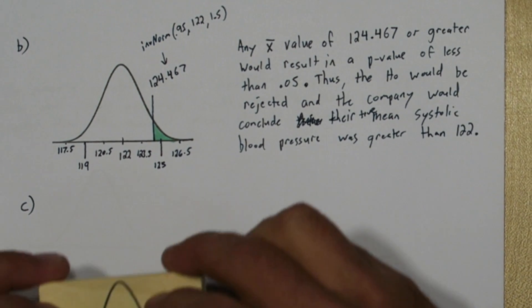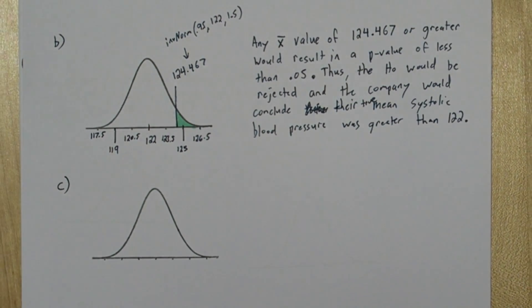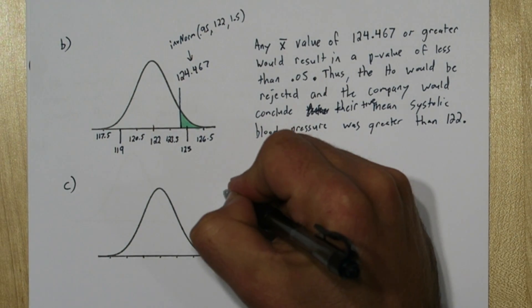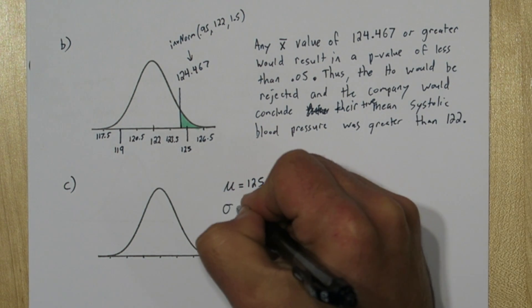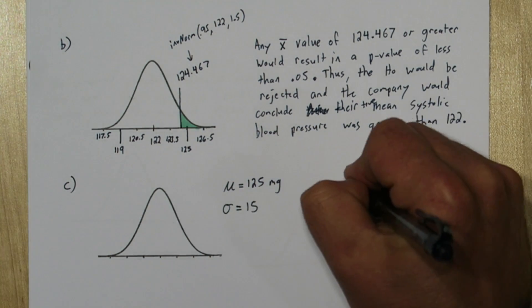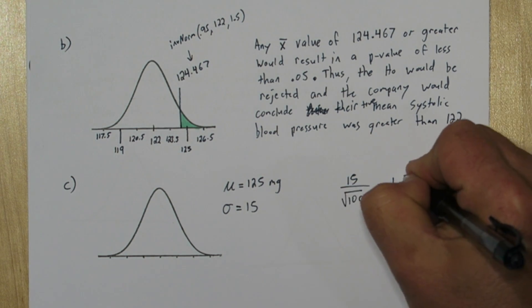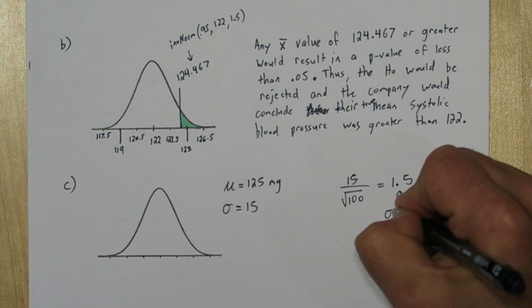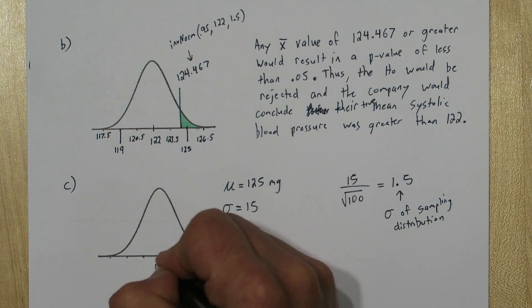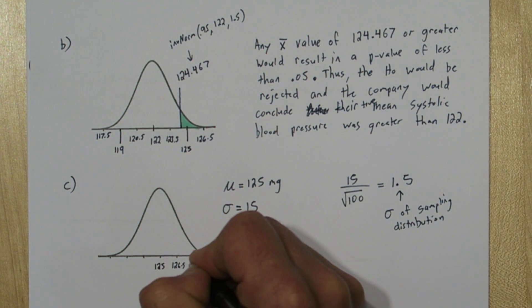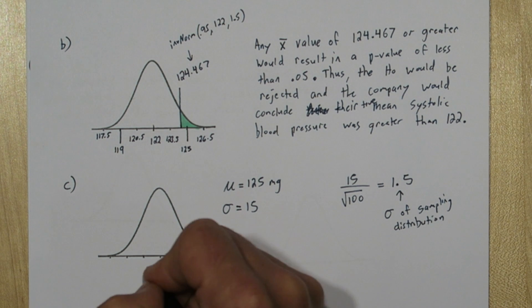For part C, let's stamp another normal distribution. We're told the truth about this company is that their true mean is 125 and their standard deviation is 15. We can find the standard deviation of the sampling distribution by dividing that 15 by the square root of the sample size.